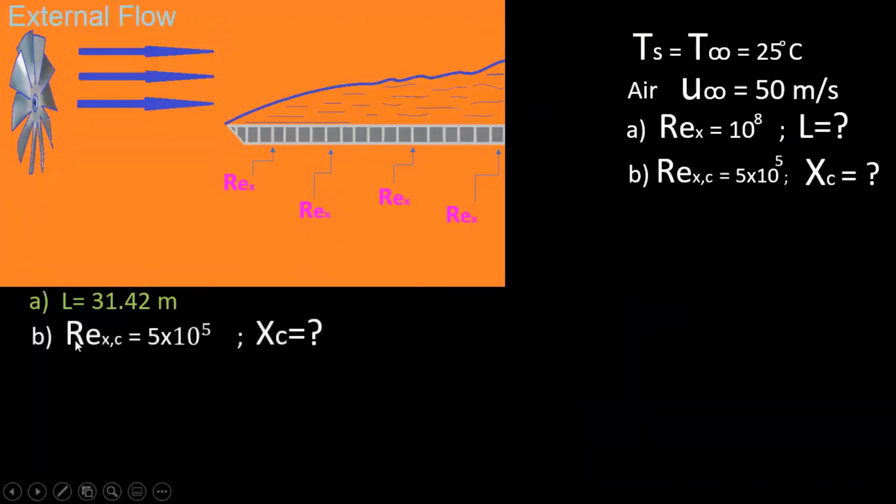Now for part B, they want us to find along this plate at what point do we see transition from laminar to turbulent. We're gonna consider our transition Reynolds number to be at 5 times 10 to the 5th.